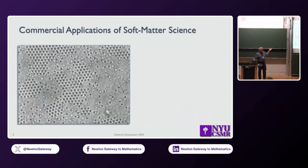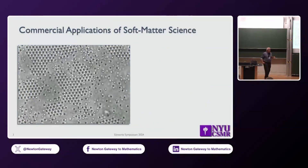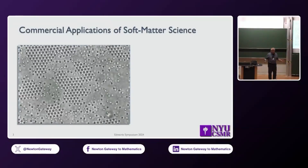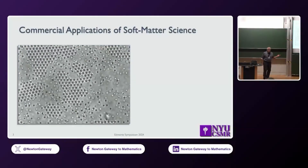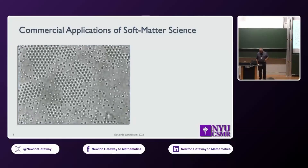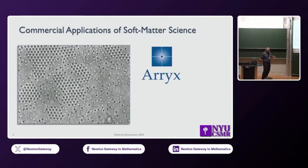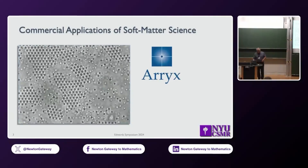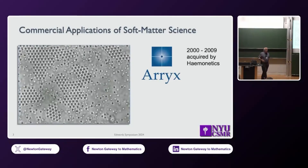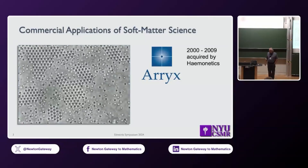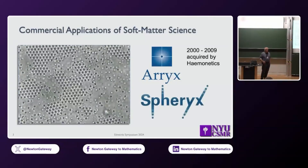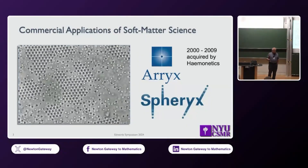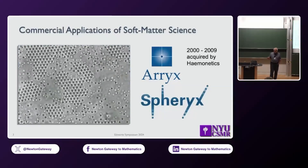I'm a soft matter scientist. Here's some soft matter — a colloidal crystal. These are charge-stabilized polystyrene spheres that should repel each other, and yet here you have a metastable crystal. On the basis of experimental observations like that, my group spun out a company called ARICS, which went on for about a decade and eventually got bought out by a much larger company. More recently, we started another company called Spherix. The Ys and Xs in the names? Apparently investors like that. I'm serious — and if you can put a Q in, that's also really good.